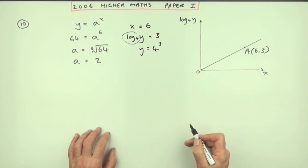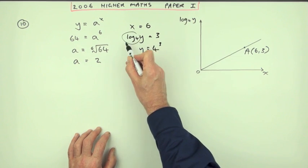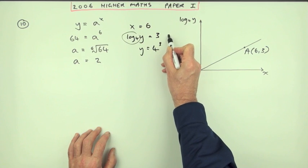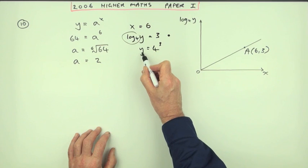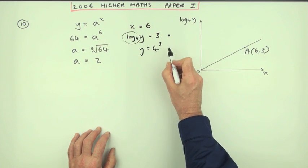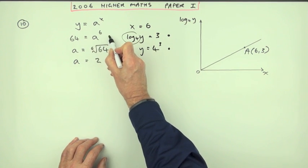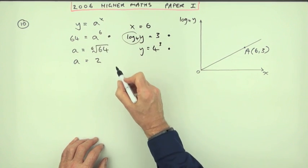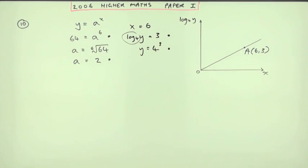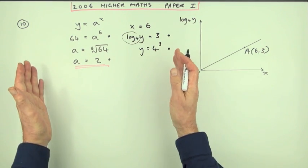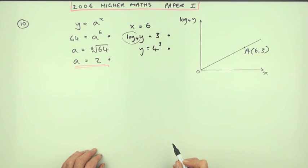I missed the marks out completely here. The marking for this would be: realizing that the log is 3 gives you a mark, changing it into y gives you 4 to the 3, then substituting it into the equation gives you this, and solving it for a finally gives you a. So there's one of the direct substitution methods.